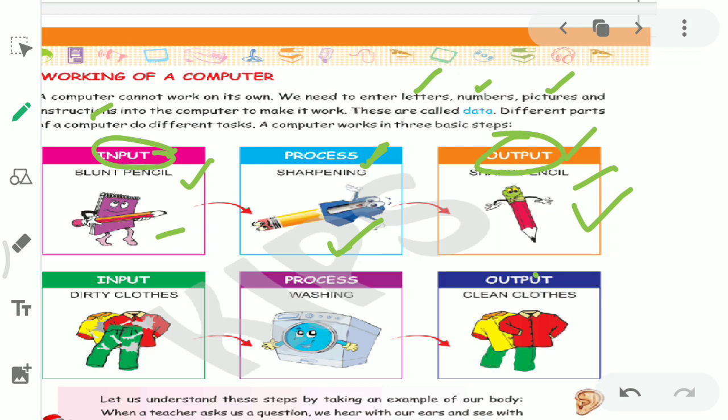Now see the next example. Dirty clothes - this is our input. We put the dirty clothes in the washing machine. Now what is the processing? When the machine is washing it, cleaning the clothes - that is processing. And our output will be clean clothes.